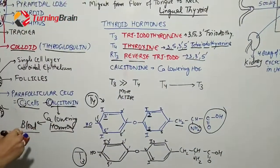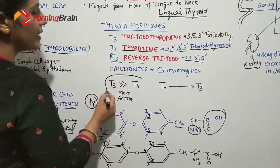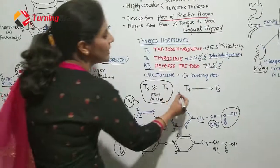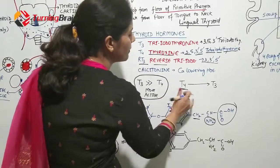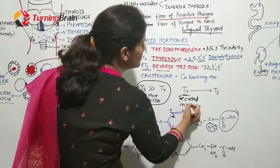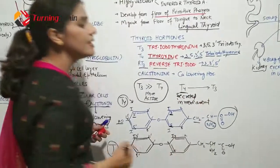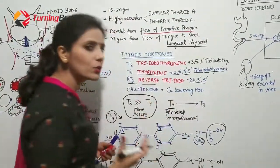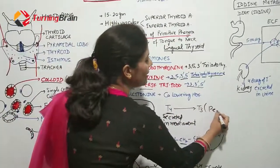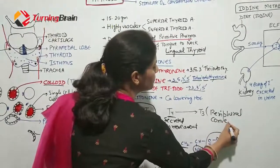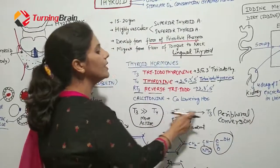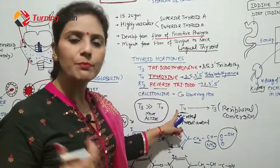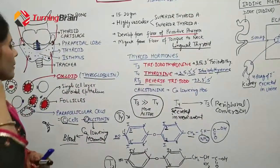An important point is that T3 is more physiologically active than T4. However, T4 is secreted in greater amounts in the body. T3 is secreted in lesser amounts, but T4 is converted to T3 in the tissues and blood — this is called peripheral conversion. So T4 acts as the major pro-hormone, and T3 is the more active form.